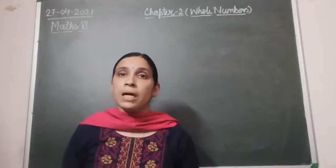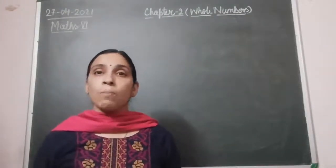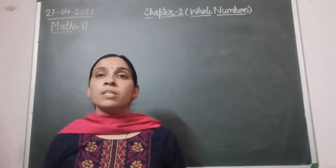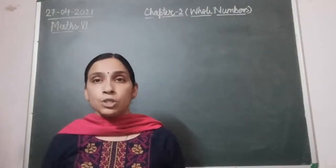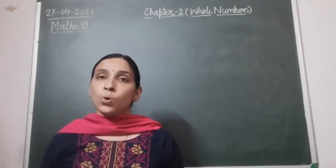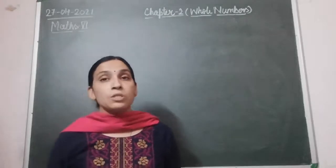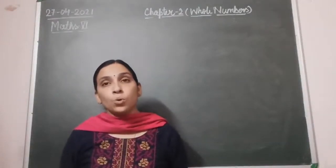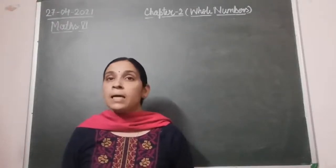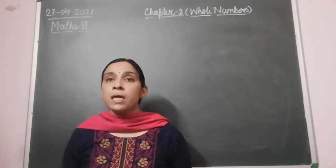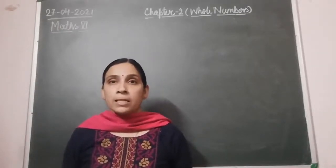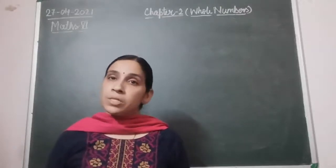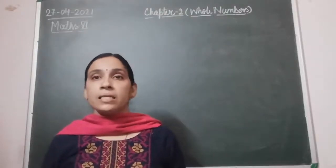Today I am going to start the class with the fourth property, that is the distributive property. The full name of this property is distributive property of multiplication over addition. What does it mean? Distributive property of multiplication over addition says that if we multiply a number with the sum of two numbers, we get the same answer as if we multiply the first number with the second number and the first number with the third number and add their results.